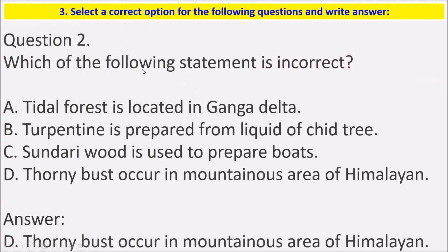Which of the following statements is incorrect? Tidal forest is located at the Ganga delta. Turpentine is prepared from the liquid of chit trees. Sundry wood is used to make boards. Thorny bushes occur in mountainous areas of the Himalayas. The incorrect statement is: thorny bushes grow in mountainous areas of the Himalayas.